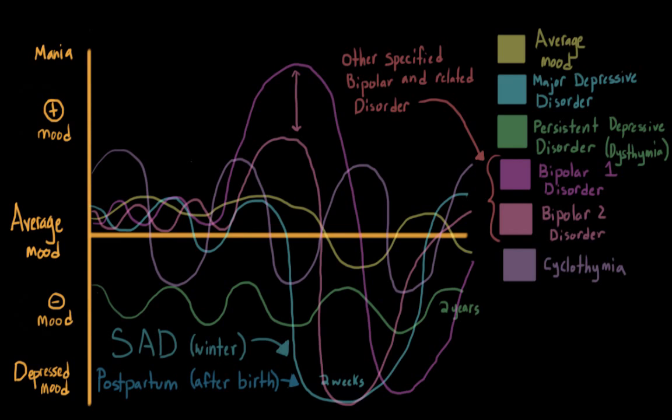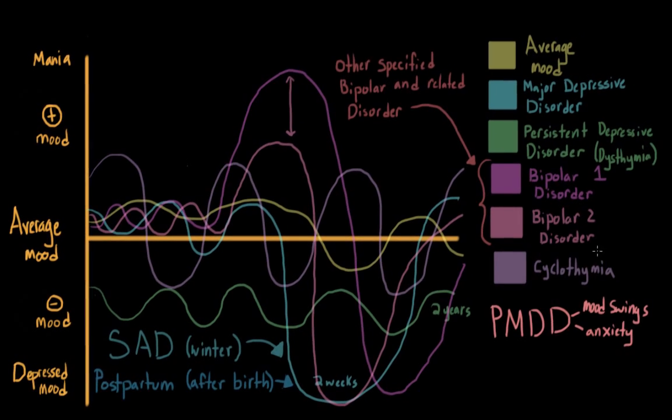Another disorder that's new for the DSM-5 that fits under this umbrella is premenstrual dysphoric disorder. And this describes mood changes, including intense mood swings, that can come about in the weeks before a woman has her period. This could include a depressed mood or irritability or anxiety, and can also include many of the symptoms that we see from major depressive disorder.